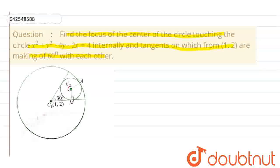This is a central locus problem, and it is touching a circle with equation x² + y² - 4y - 2x = 4.